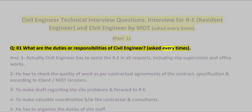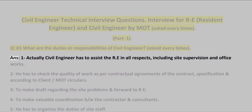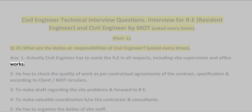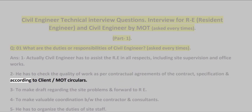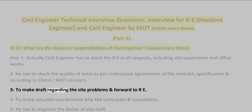ANS: 1. A Civil Engineer has to assist the RE in all respects, including site supervision and office works. 2. He has to check the quality of work as per contractual agreements, specification, and according to client/MOT circulars. 3. To make drafts regarding site problems and forward to RE.